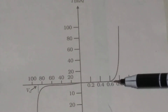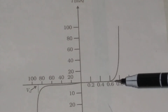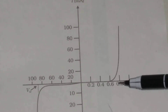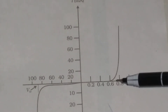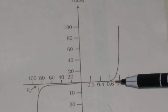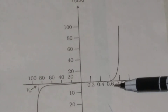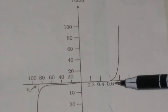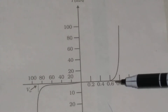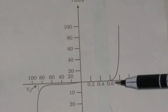At a voltage between 0.6 and 0.8 — that is, at 0.7 volt — there is a specific voltage called the threshold voltage, or cut-in voltage. This voltage is called the threshold voltage or cut-in voltage.